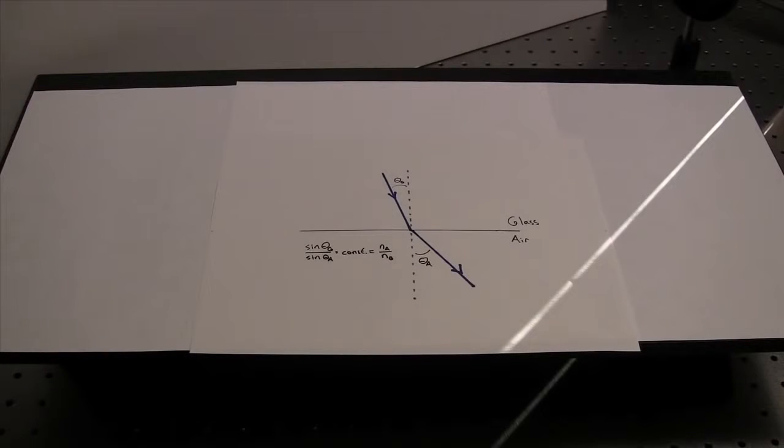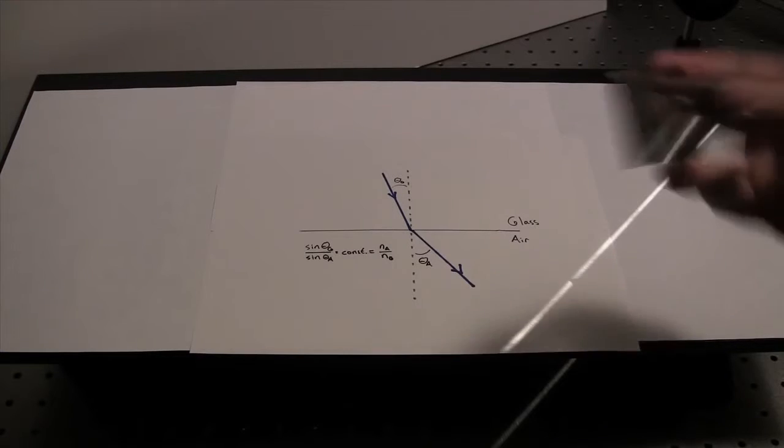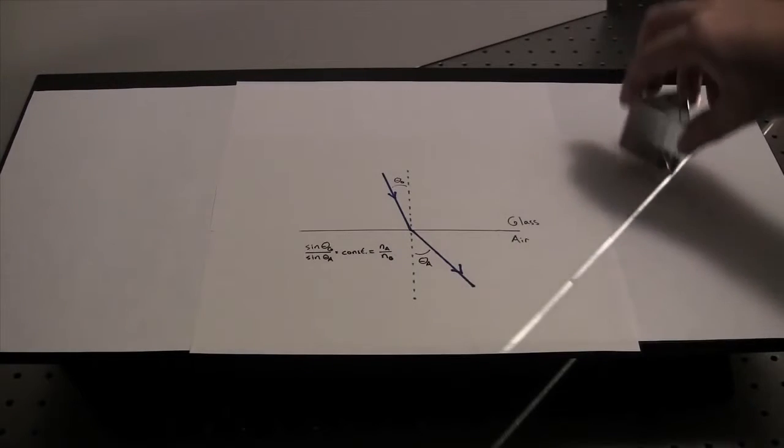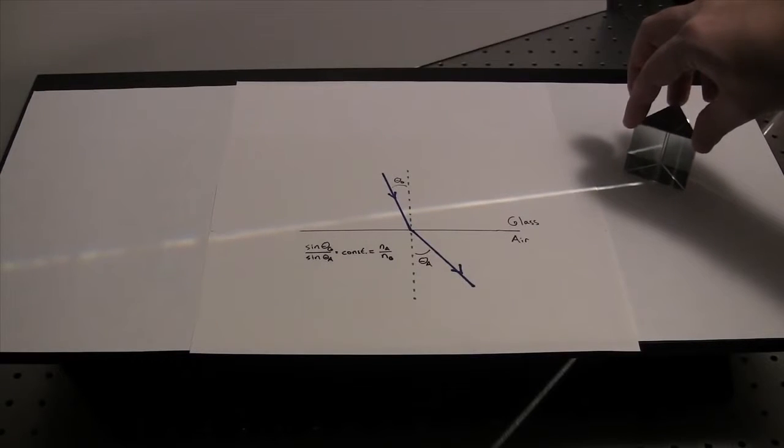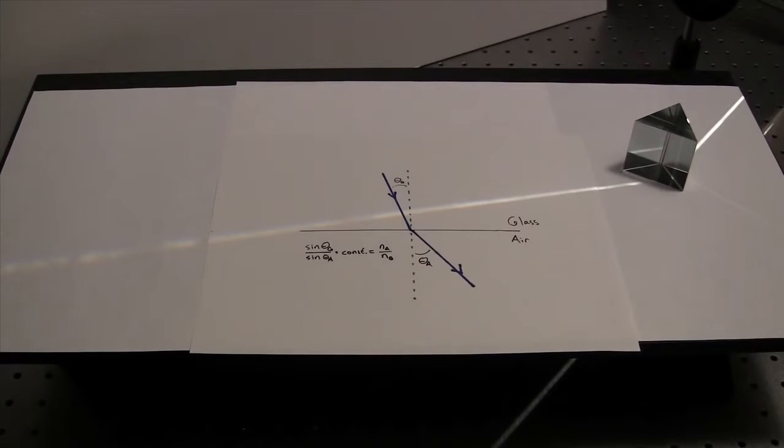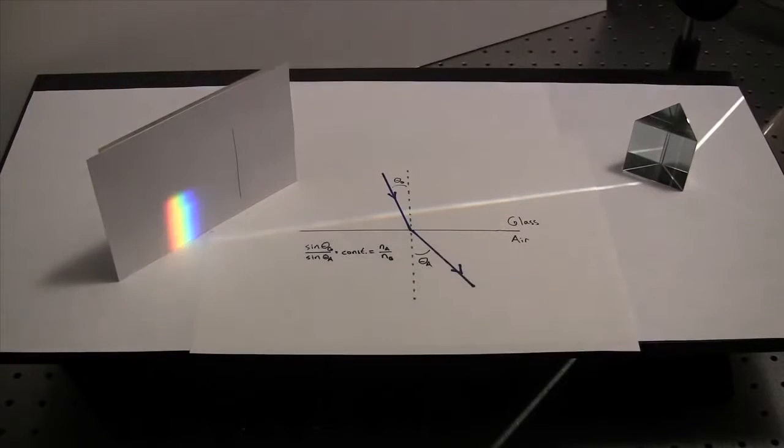Newton was working on designing lenses for telescopes when he decided to investigate the phenomenon of prismatic colors. Those are the colors that occur when you pass white light through a prism. So he obtained a triangular prism, and he passed some white light through it, and he saw a rainbow just like he expected. But then he noticed something.